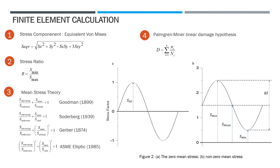Usually, this data is taken at R = -1, or ratio equals minus 1, which means that the tensile and bending stresses have the same ratio. If the fatigue data will be used to analyze the problem under zero-based loading condition, or with a certain ratio, it is necessary to correct the mean stress that occurs. There are several theories that can be used, namely Goodman, Soderberg, Gerber, and SWT elliptical. The fatigue life can be calculated based on the Palmgren-Miner Linear Damage Hypothesis in equation 4. Failure occurs when cumulative damage D is greater than 1.